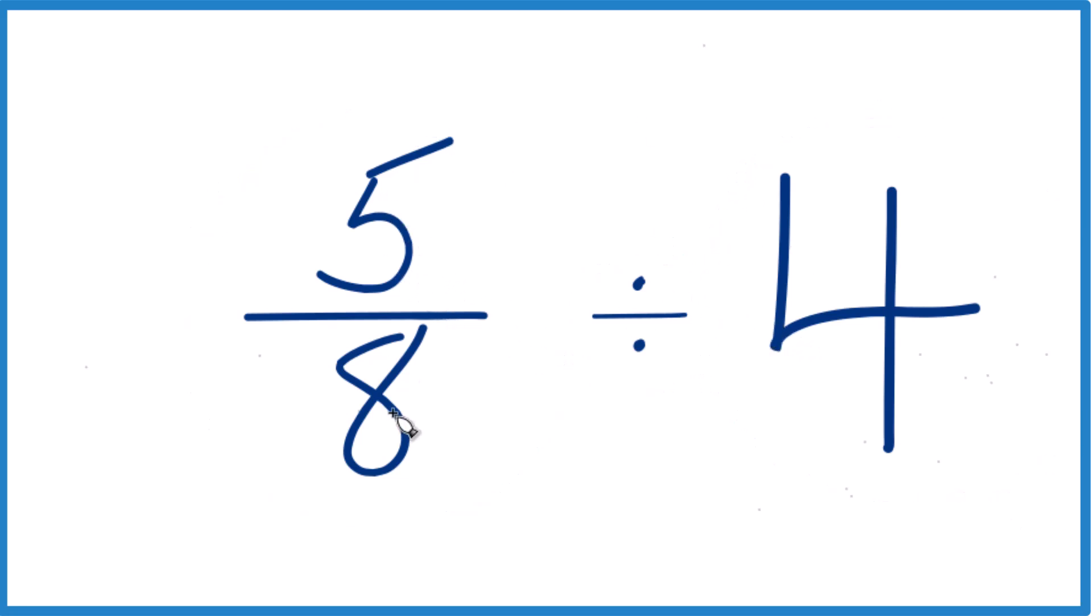So 5 eighths, that's less than 1. This number is less than 1, and we want to know how many times 4 goes into 5 eighths. So we should get a small number. Keep that in mind.